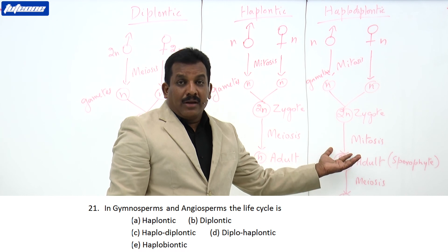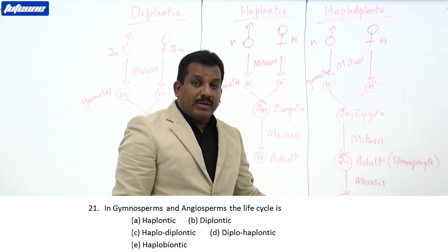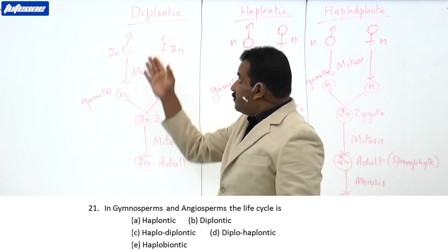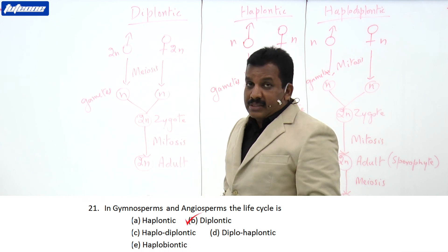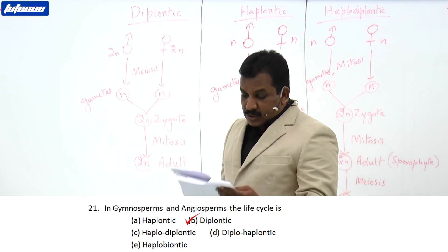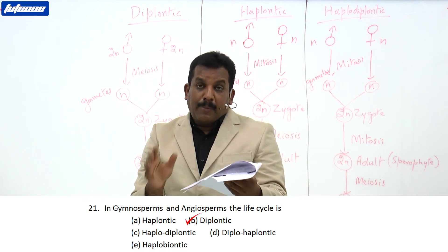In bryophytes, the life cycle is haplodiplondic. In pteridophytes, it is diplohaplondic. In angiosperms and gymnosperms, the life cycle is diplondic. So the answer is diplondic.